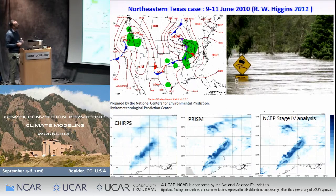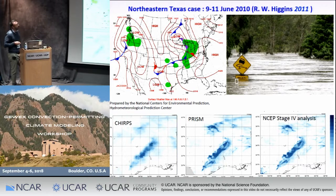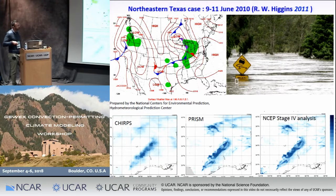The second case is the North-Eastern Texas case, which happened between 9 and 11 June 2010. This event was characterized by a low-level flow which transports moisture across North-Eastern Texas, where the maximum precipitation occurred. Also for this event, we considered different observational datasets: CHIRPS, PRISM, and the NEXRAD Stage IV analysis. Also for this event, the observational datasets show similar results.